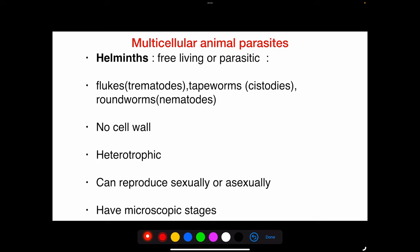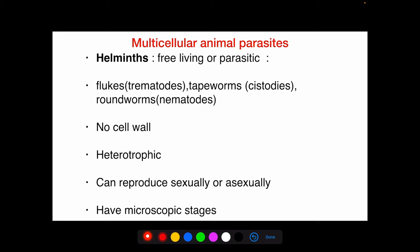Helminths are multicellular animal parasites that may be free-living or parasitic. They include flukes, tapeworms, and roundworms. They have no cell wall, are heterotrophic, can reproduce either sexually or asexually, and have microscopic stages in their life cycle.